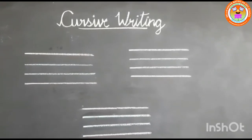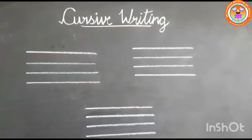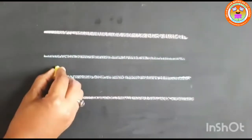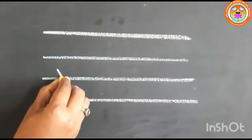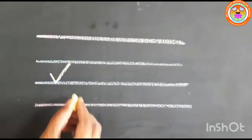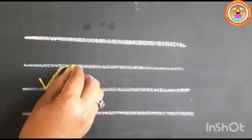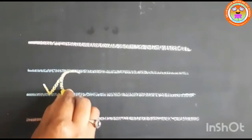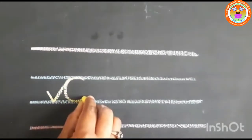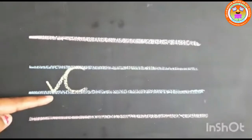First we will write cursive small letter C. It is very easy to write cursive letter C. Keep your pencil in the middle and put a small tick and curve on the top, come down, touch the blue line and stop here. This is cursive letter C. This is very easy to write.